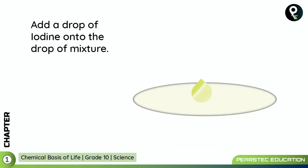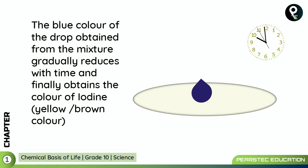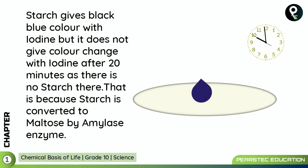Add a drop of iodine onto the drop of mixture. The color changes — the blue color of the drop obtained from the mixture gradually reduces with time, and finally you obtain the yellow-brown color of iodine. This shows that starch gives a black-blue color with iodine, but after 20 minutes there is no color change because there is no starch remaining.